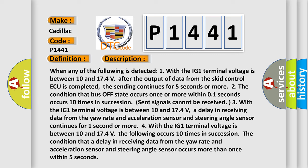Three, the condition that a delay in receiving data from the yaw rate and acceleration sensor and steering angle sensor continues for one second or more. Four, with the IG1 terminal voltage is between 10 and 17.4 volts, the following occurs 10 times in succession: the condition that a delay in receiving data from the yaw rate and acceleration sensor and steering angle sensor occurs more than once within five seconds.